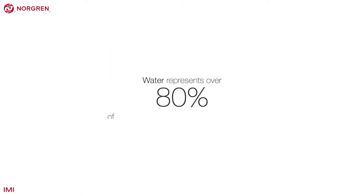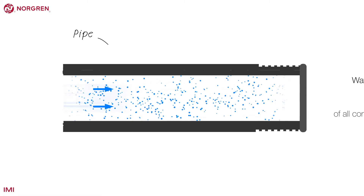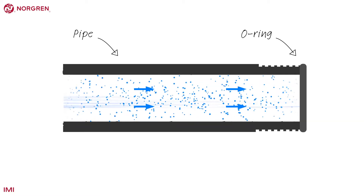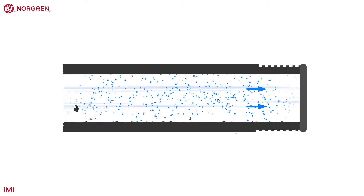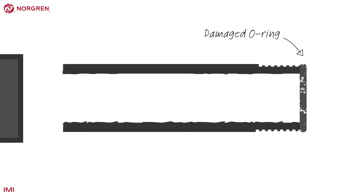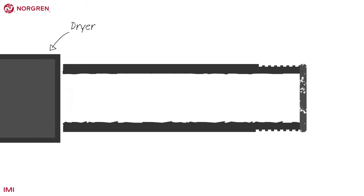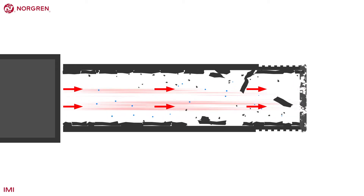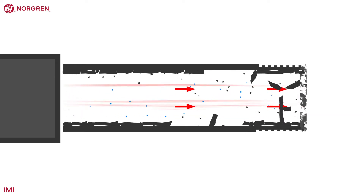Water represents over 80% of all contamination within compressed air. Wet air causes corrosion through the entire system and reduces the lifespan of components. Fragments of corroded piping can end up being fired through the system and cause significant damage. Adding a dryer to an existing system that is already suffering from corrosion can actually exacerbate this problem, causing more fragments to become loose in the system.